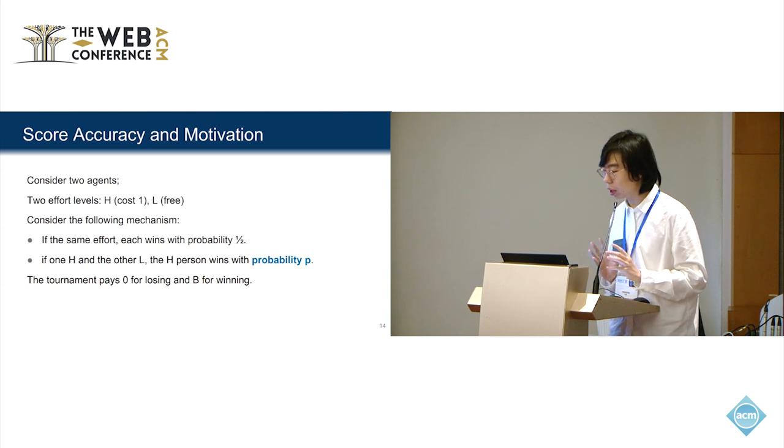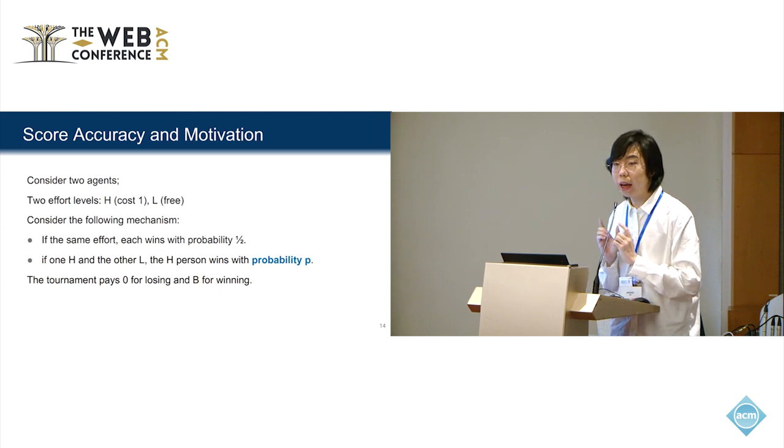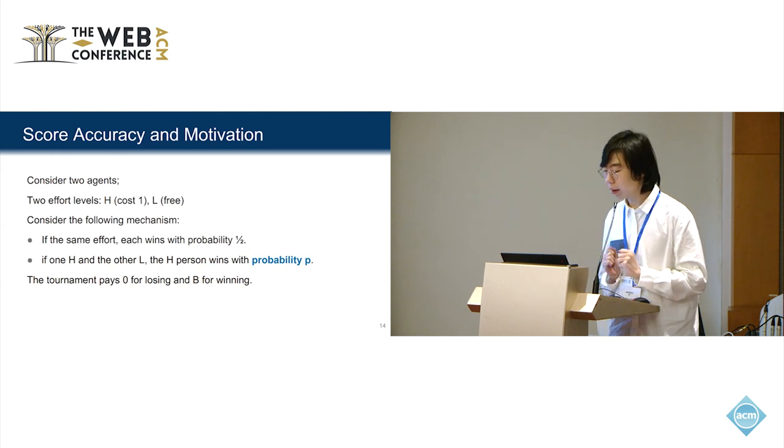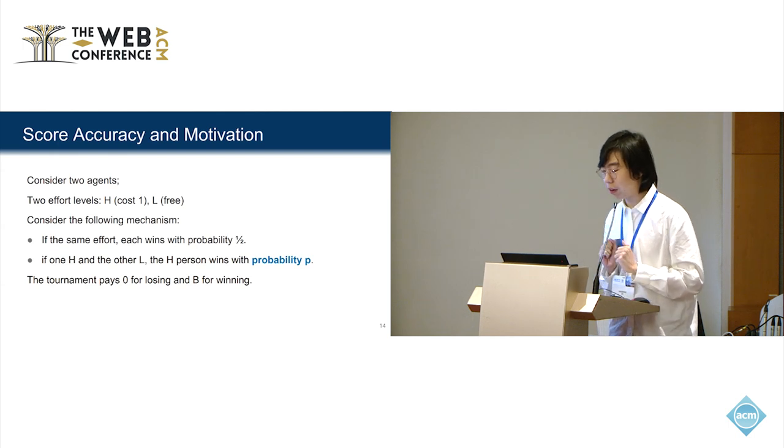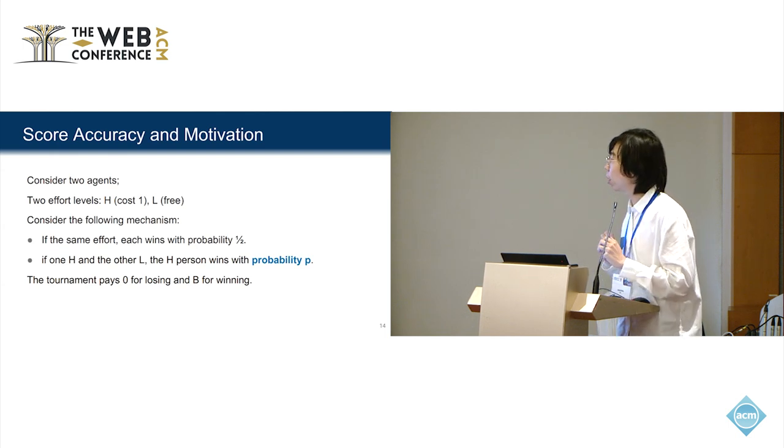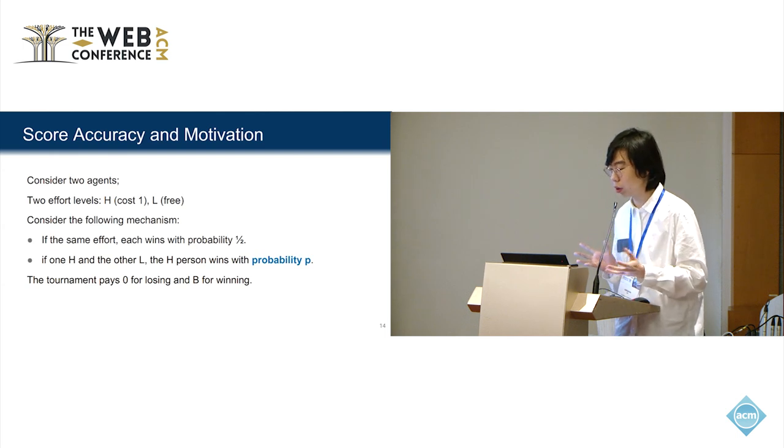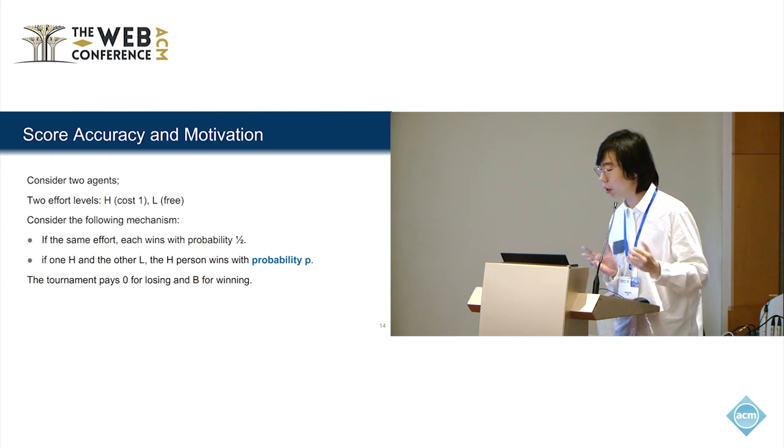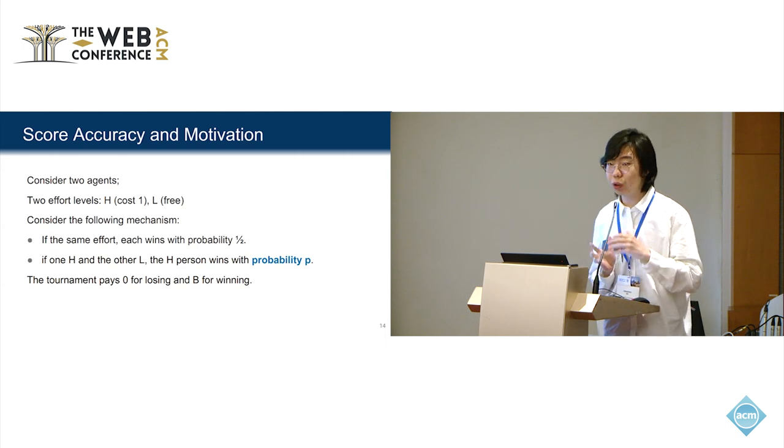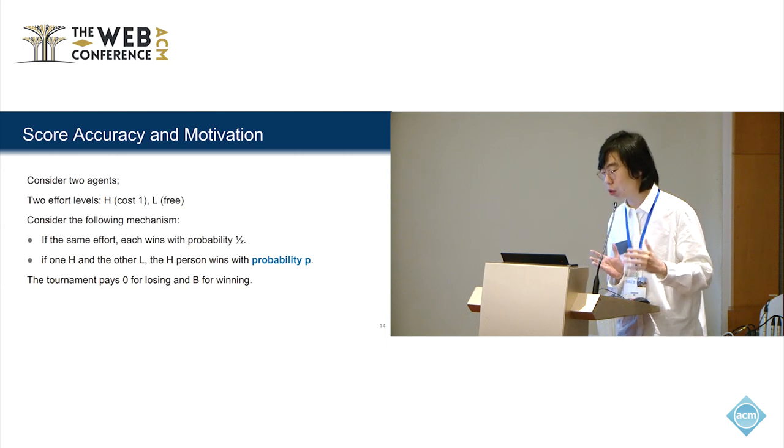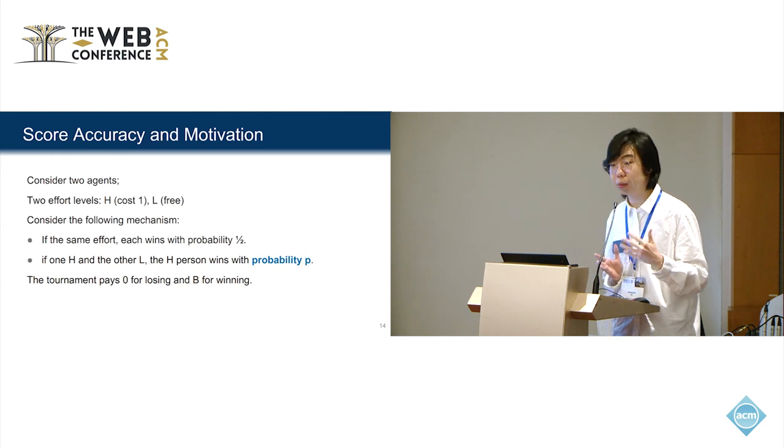Consider there's two agents, and the agents can choose from two effort levels. High effort costs one, and low effort is free. Consider the following mechanism. If both agents exert the same effort, each agent will have a higher score with probability a half, so they win with probability a half. If one agent chooses high effort and the other chooses low effort, the high effort person wins with probability p.